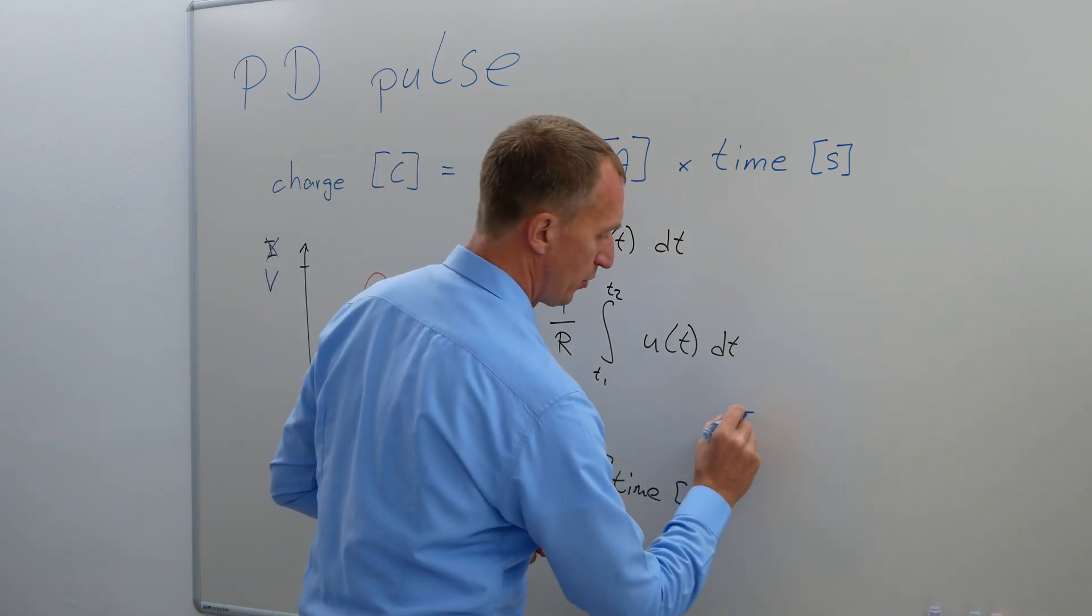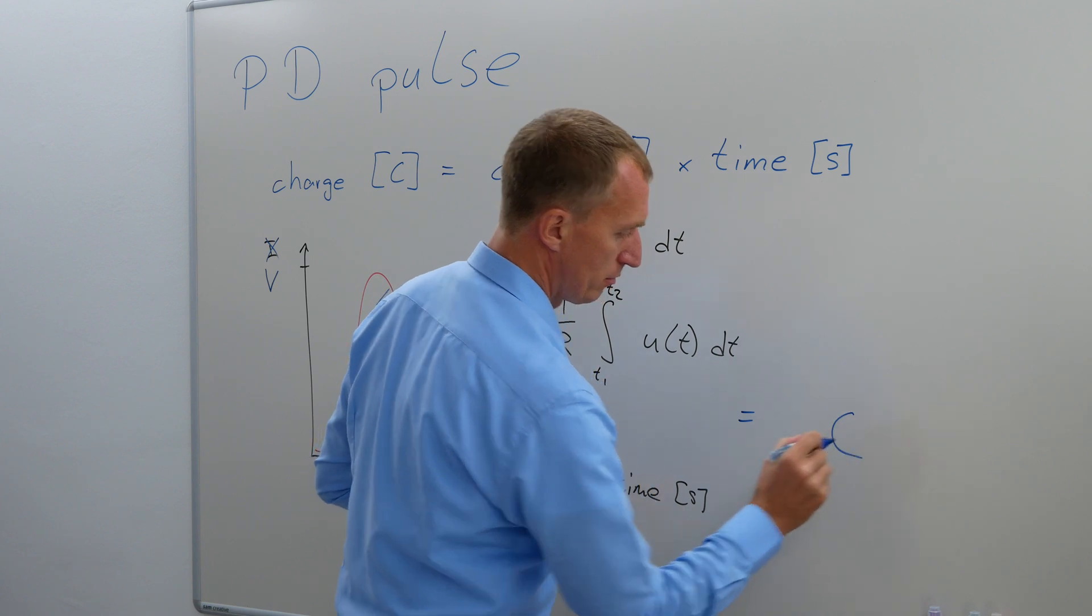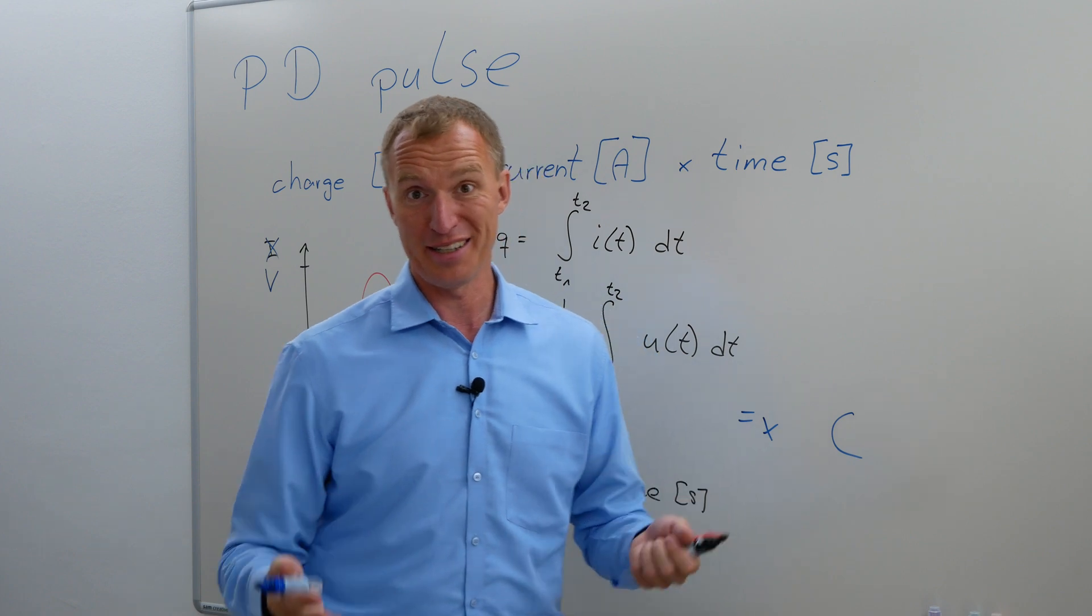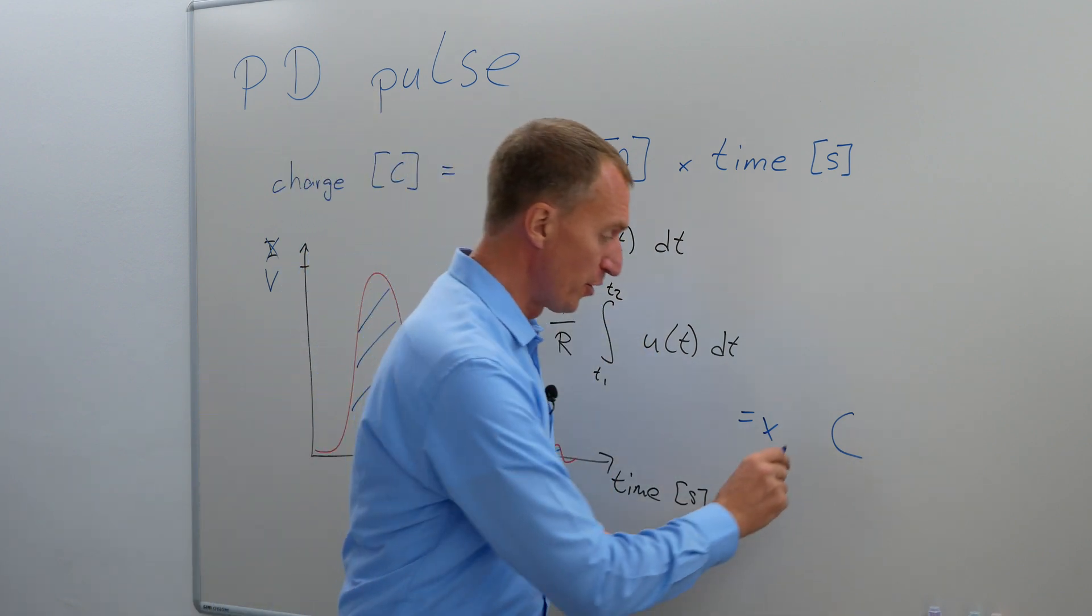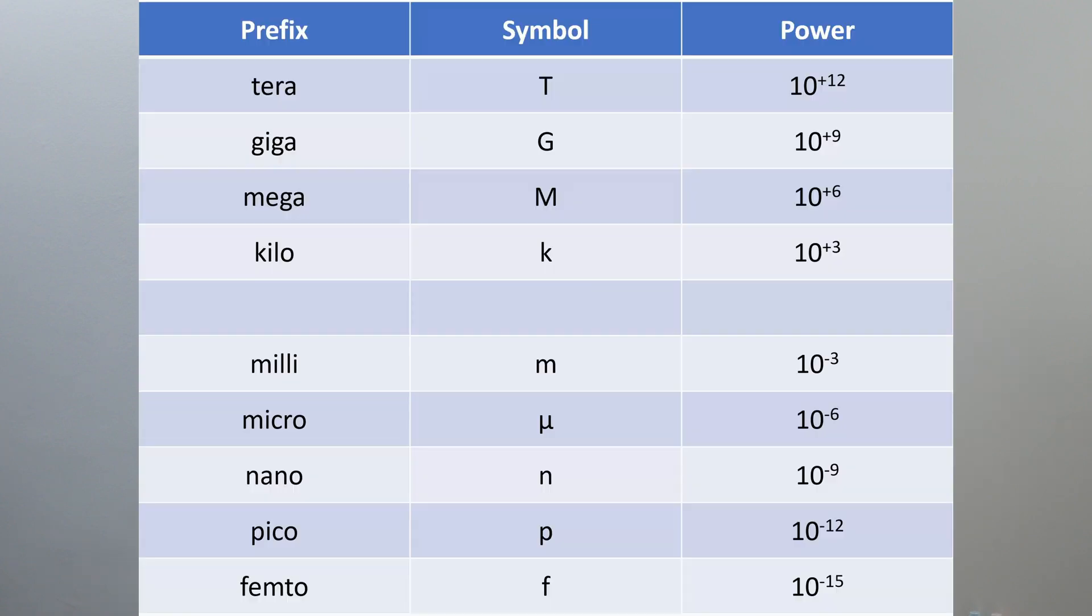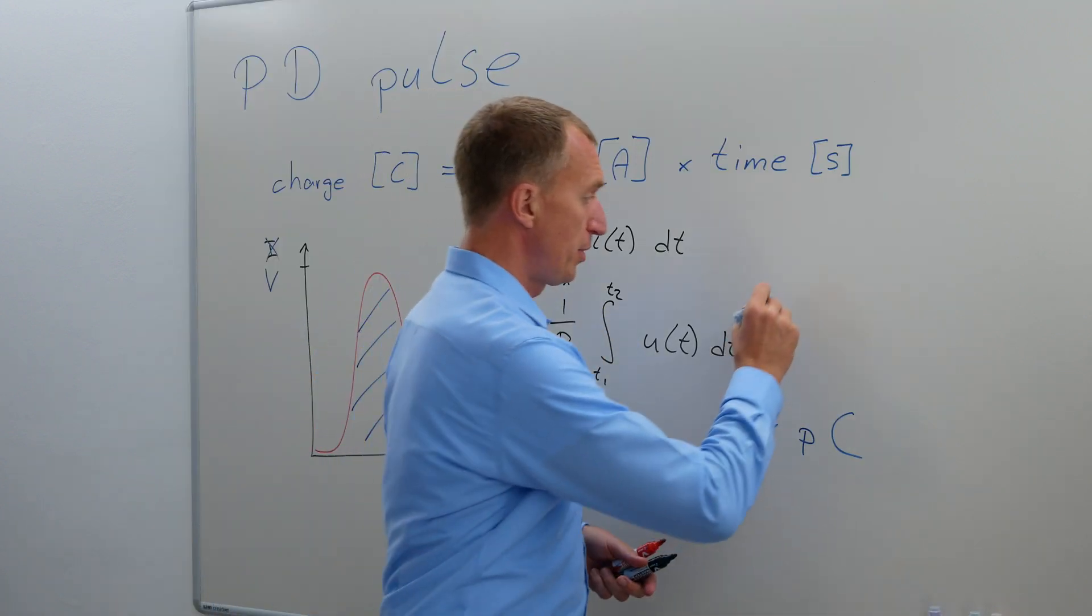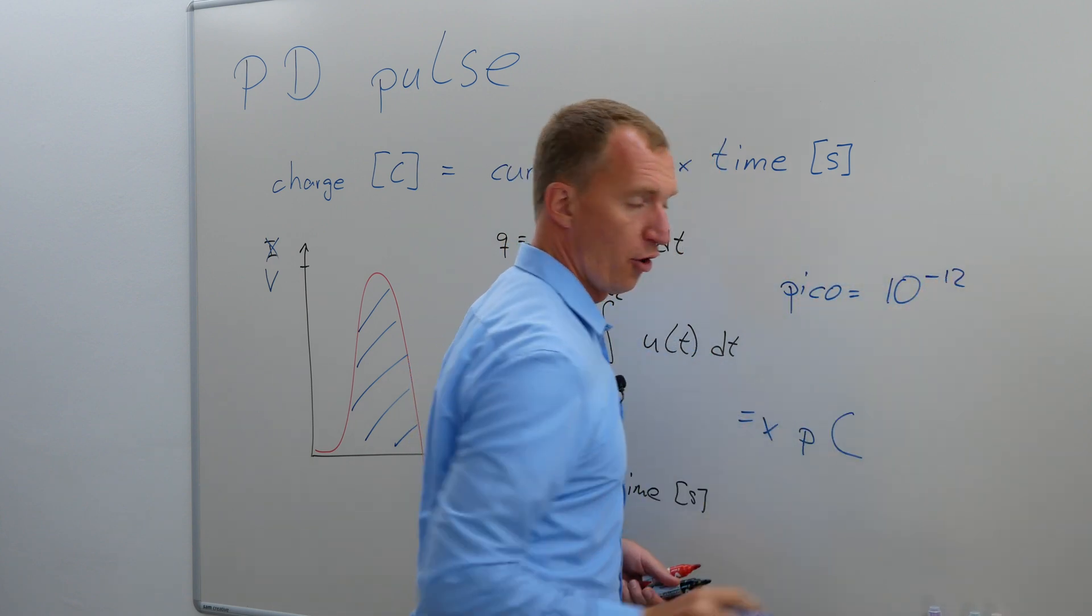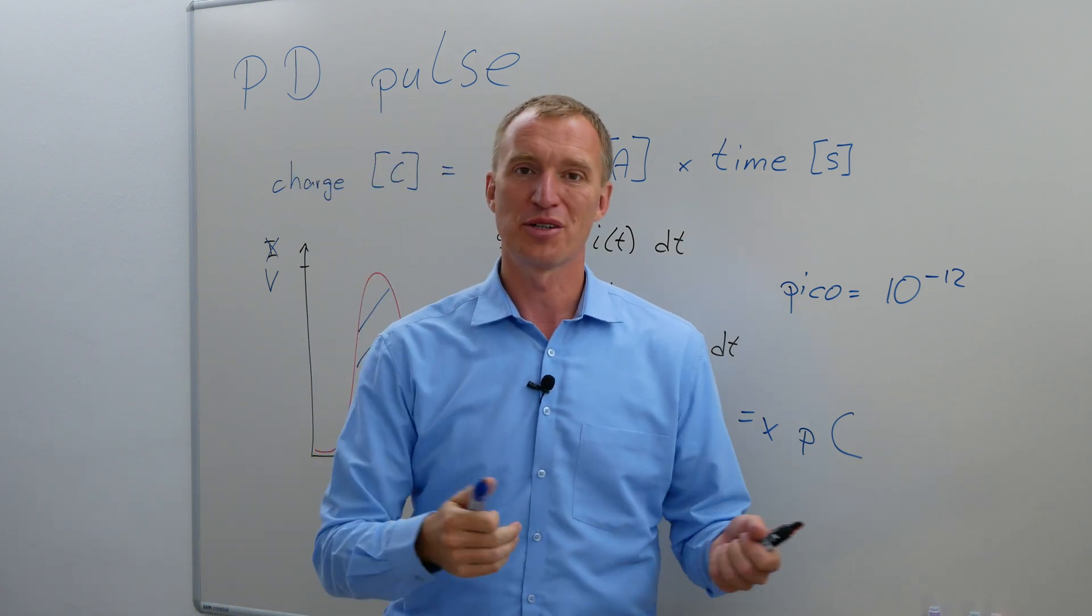And we are ending up with some kind of a Coulomb value. Very often, hopefully, we are ending up with something which is called a picocoulomb value. What was pico? Well, here's a small overview about the indices. We can see kilo, we have milli, we have micro, we have nano, and we have pico. So now we know that pico is 10 to the power of minus 12, and we hope that we are measuring in this area.